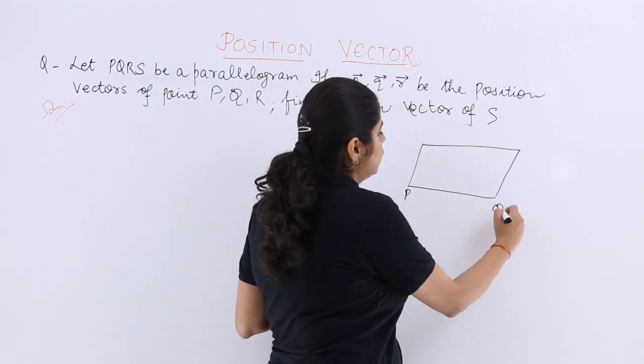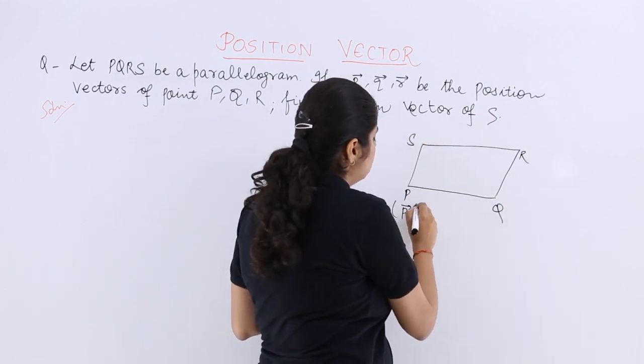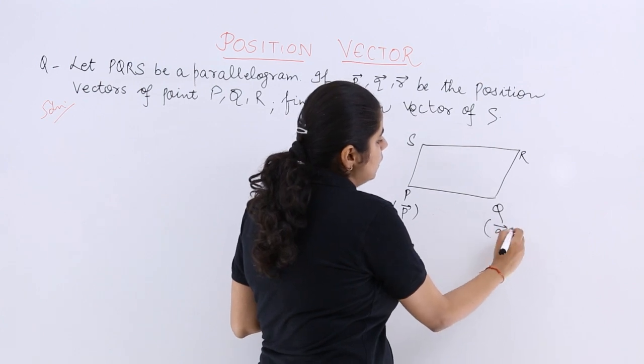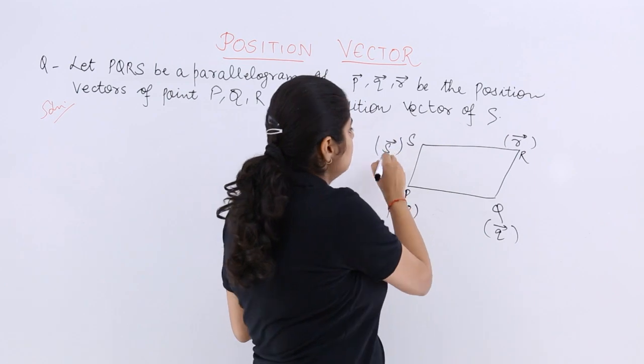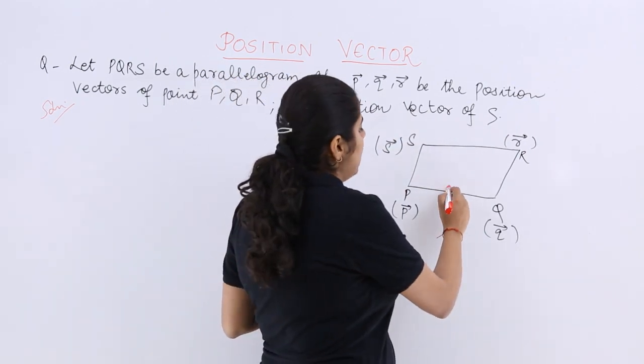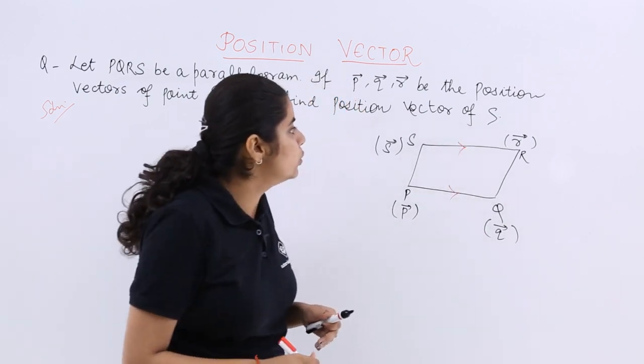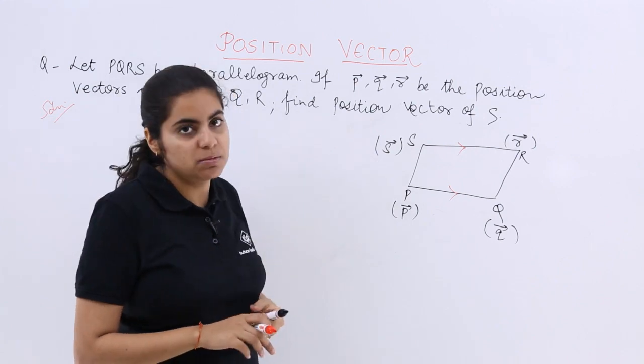The parallelogram has points P, Q, R, and S labeled. PQ is parallel to SR. We need to find the position vector of S, which we'll denote as small s.